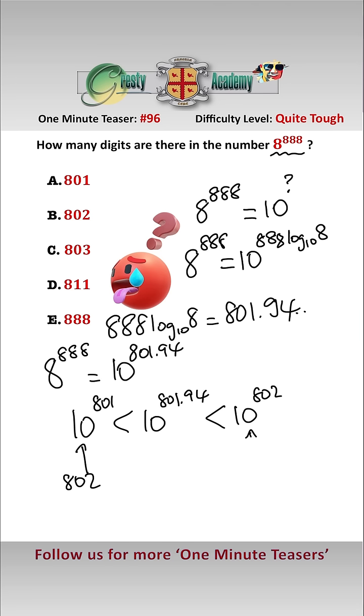Which is 1 followed by 801 zeros. And we know that 10 to the power of 802 has 803 digits, which is 1 followed by 802 zeros. So therefore, anything in between has 802 digits as well, which is answer B.